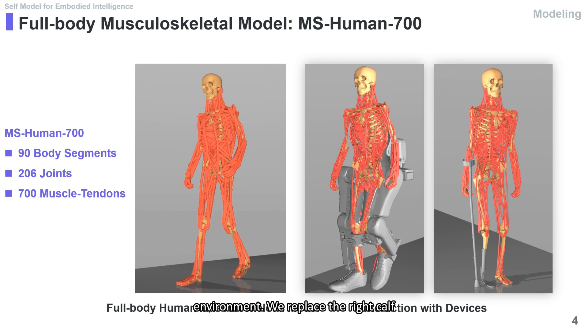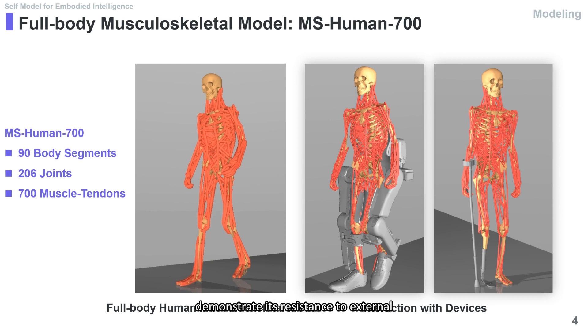In another environment, we replace the right calf and foot of the model with a prosthetic and add a crutch to its right hand to demonstrate its resistance to external disturbances and imitate gait under pathological conditions.